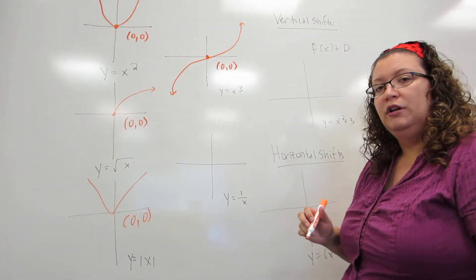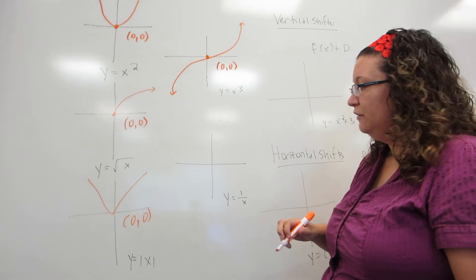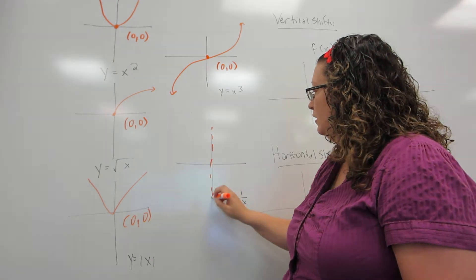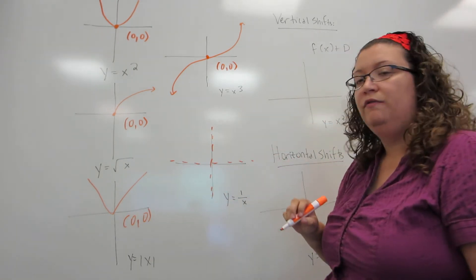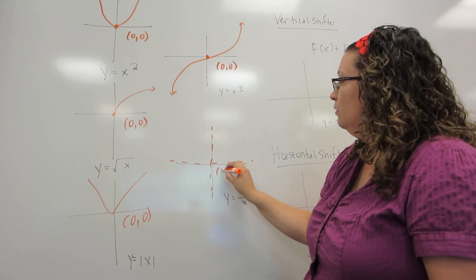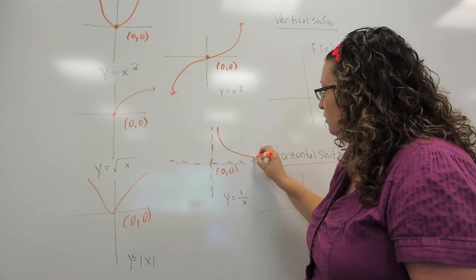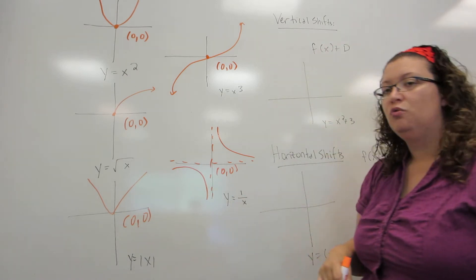And lastly, we're going to look at y equals 1 over x. This graph is very different than the others. It has a horizontal and vertical asymptote that meet at the origin. And then the graph sits in between them.